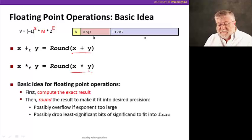The basic idea then for floating point operations is to first compute that exact result, and then round to make the result fit into the desired precision. We might have possible overflow if the exponent is too large, and we might have to drop some least significant bits in the significant if our fraction gets too long. For example, if we do an addition between two numbers of very different exponents.